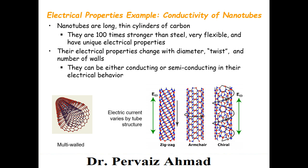If you twist the carbon nanotube, their electrical properties will switch. In other words, the electrical properties of carbon nanotubes change if you change the diameter. A conducting nanotube can be switched to a semiconductor nanotube. However, this varies by type of material. For a boron nitride nanotube, it has similar strength to carbon nanotubes, but you cannot switch the properties — especially the electrical properties.